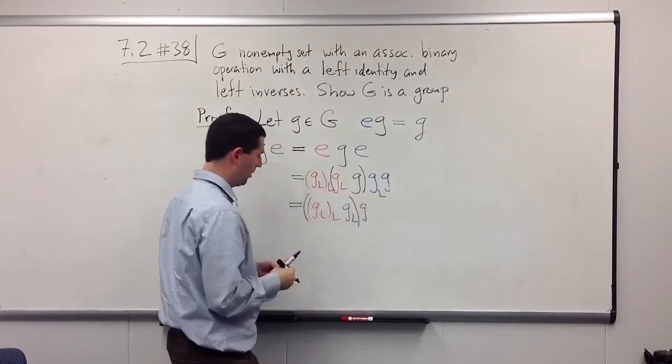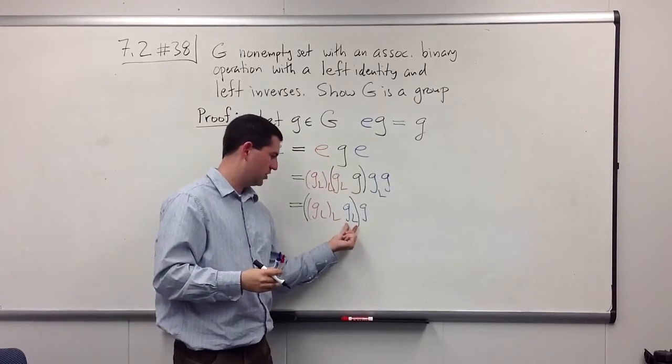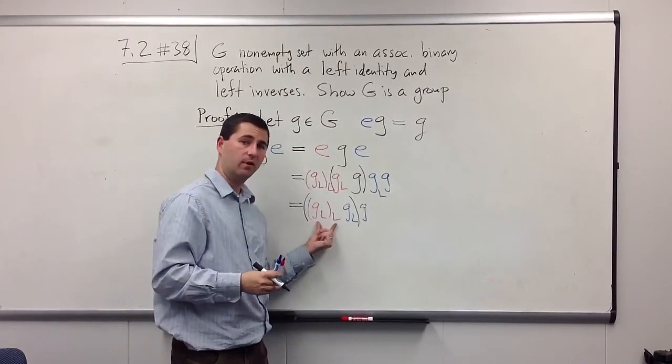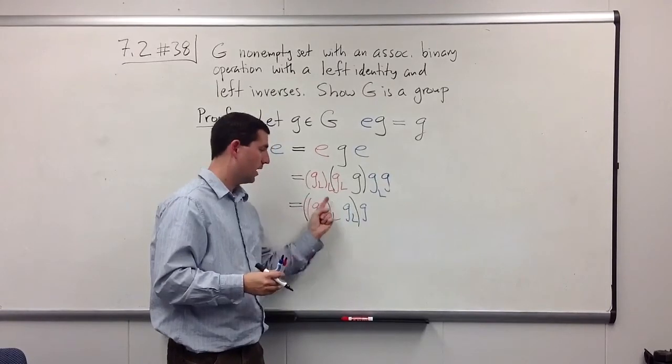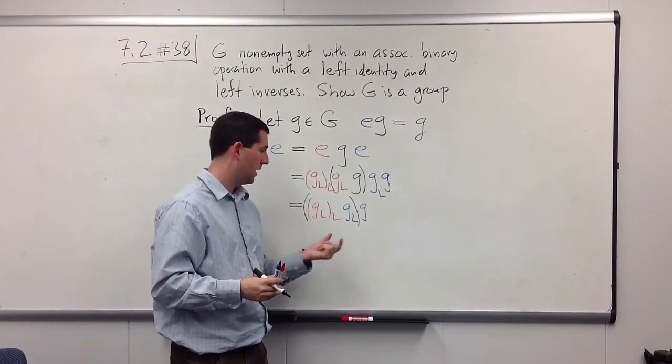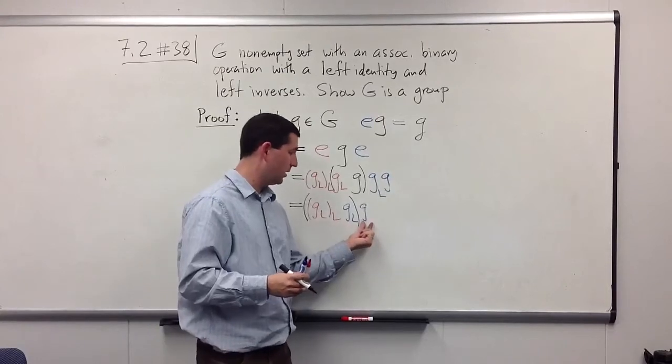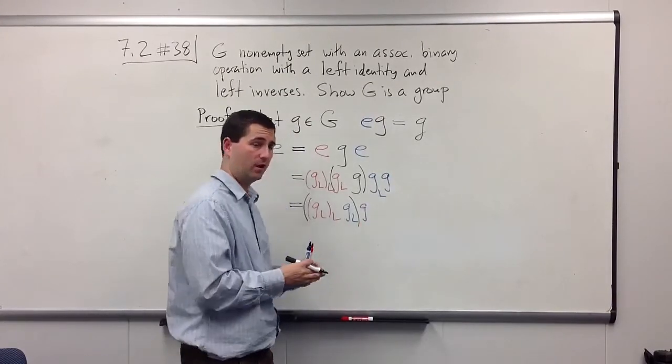Okay? Again, play a little associativity game here. Notice I have g_l and g_l's left inverse. When I multiply these, I get the identity element. It's a left identity element, so when I multiply it by g, nothing's going to happen. I'm just going to get g.